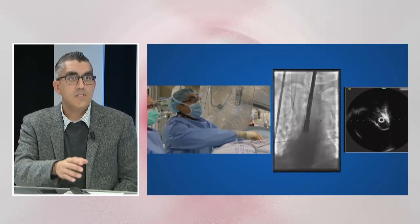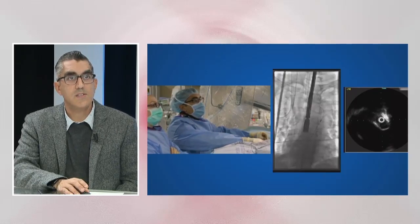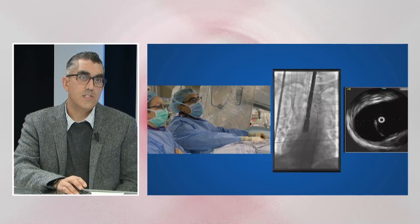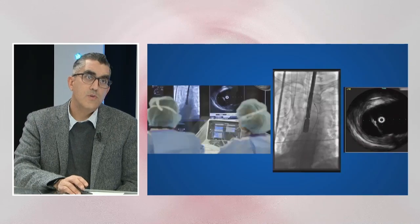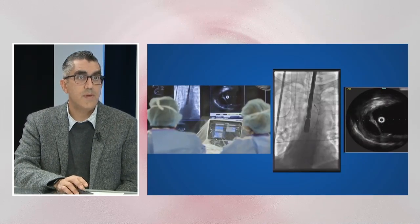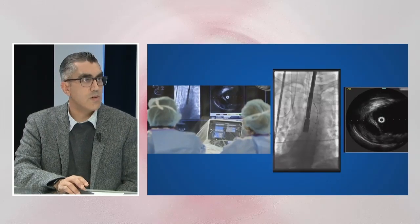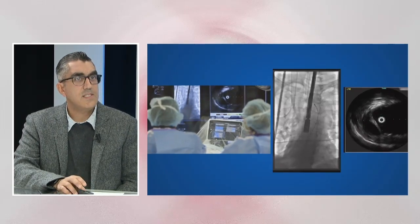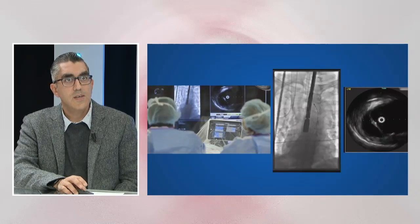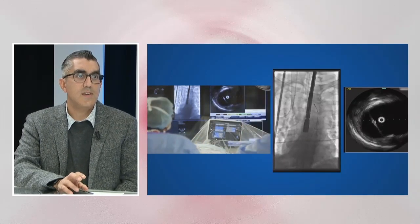You can see here we're in the true lumen — that wire actually made it into the subclavian, so I'm quite happy about that as we're crossing. We do use transesophageal echo a lot: first for wire placement, and second to make sure we're not damaging the ascending aorta or causing a retrograde dissection.